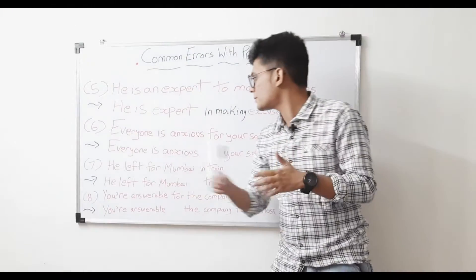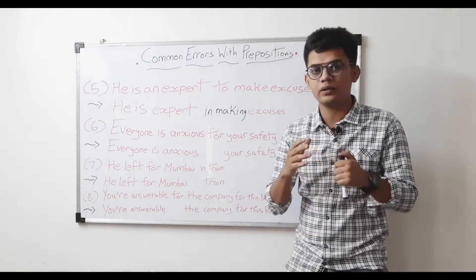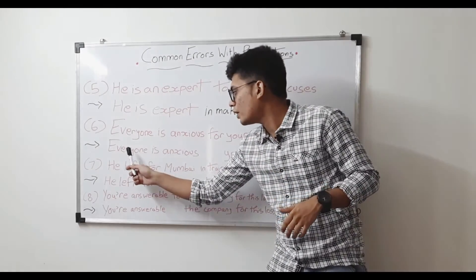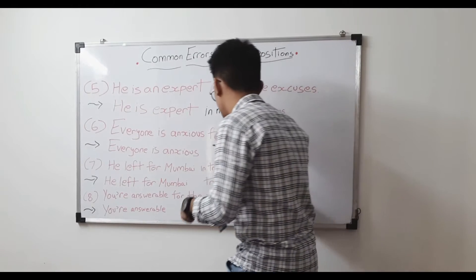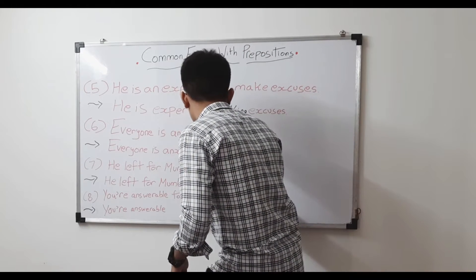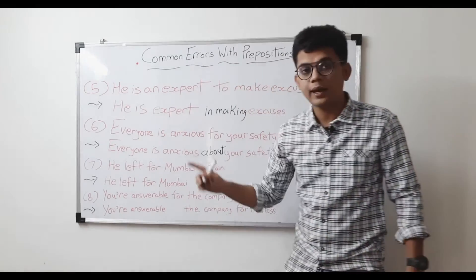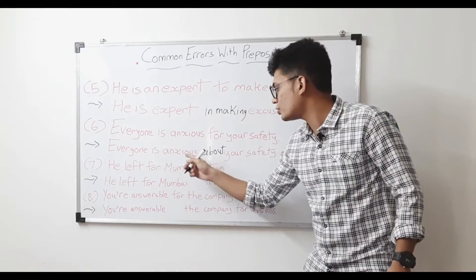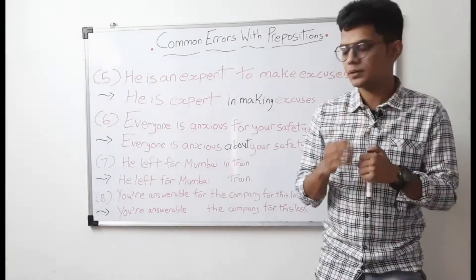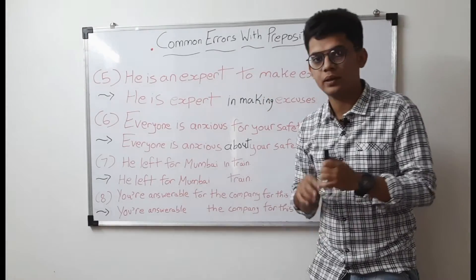Sixth sentence: 'Everyone is anxious for your safety.' That is wrong. The correct sentence will be: 'Everyone is anxious about your safety.' — 'about' is the correct preposition in this sentence.